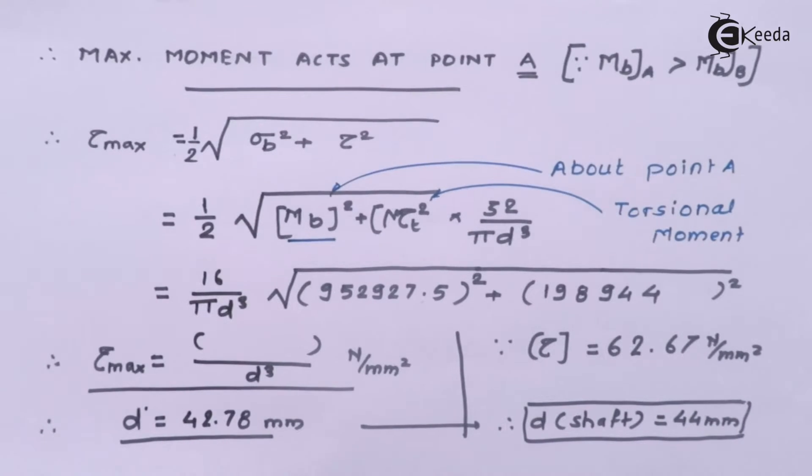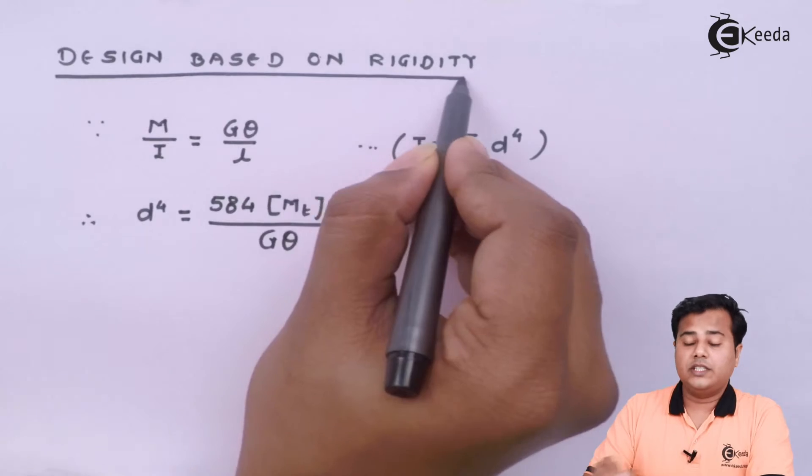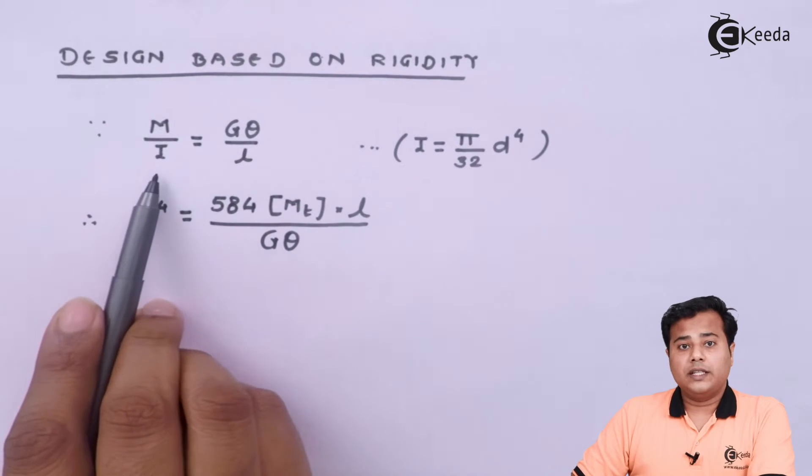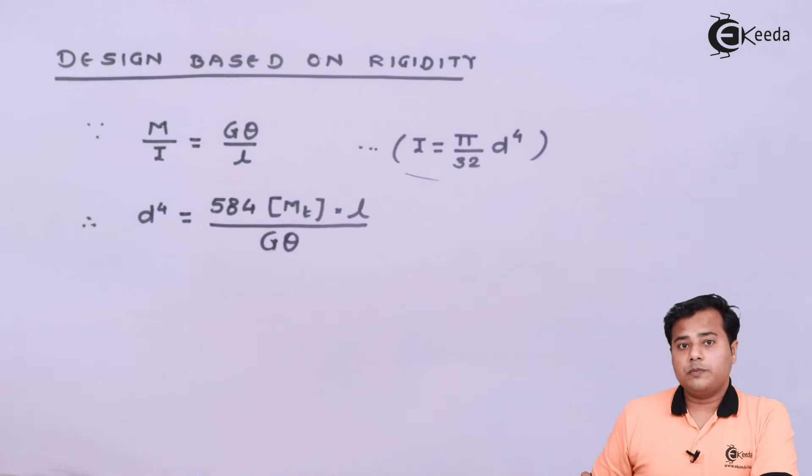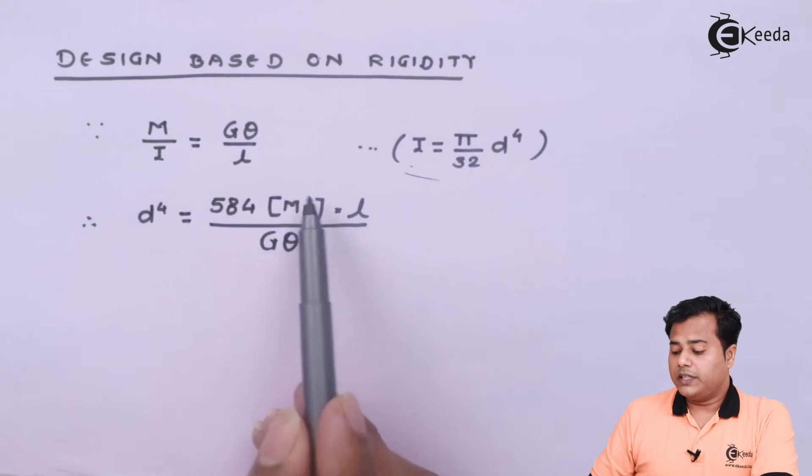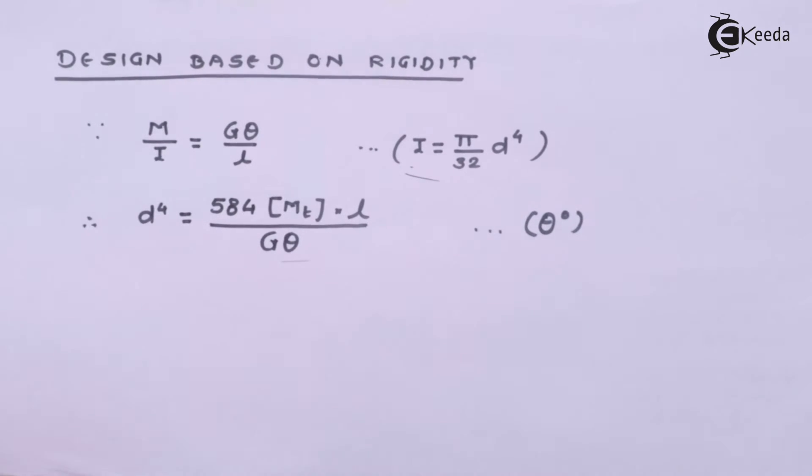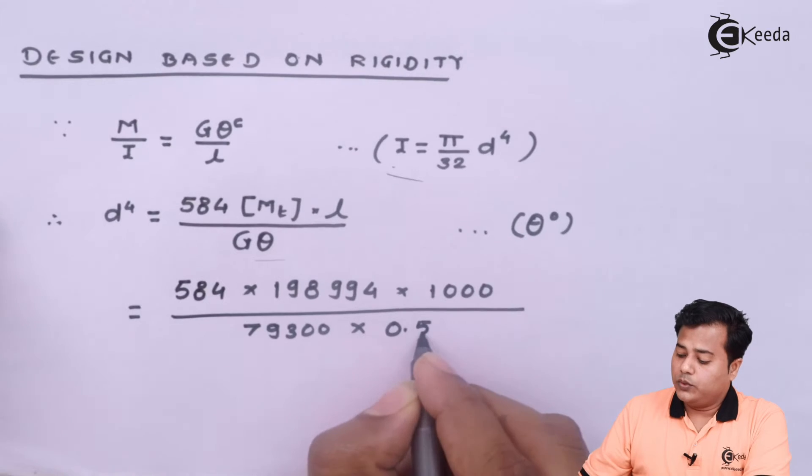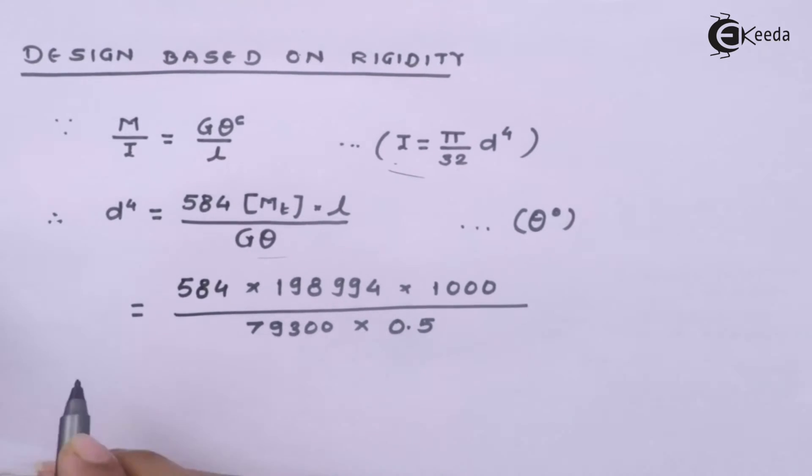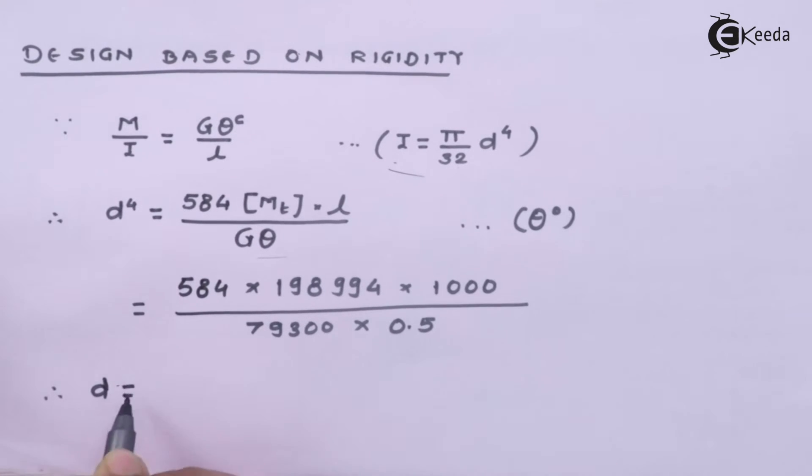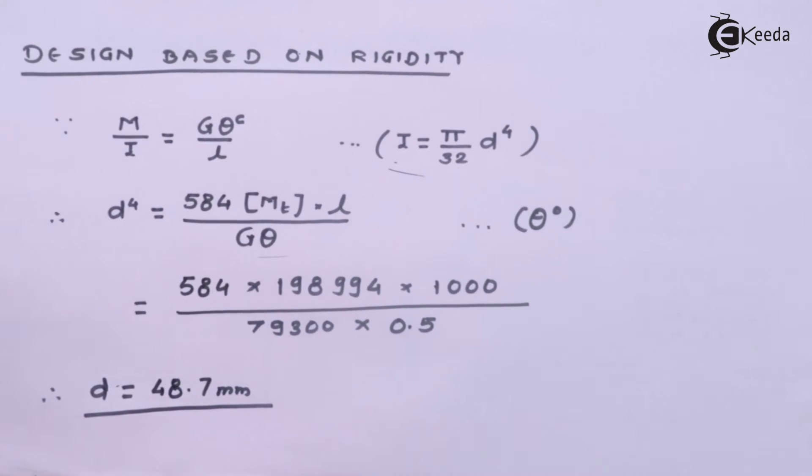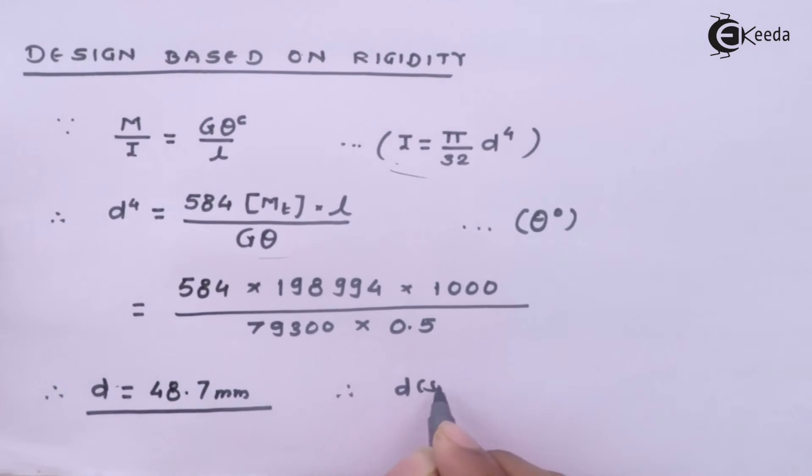But that is not the end of our problem, because we have been given the second condition: design based on rigidity. We know the bending moment equation M/I = Gθ/L. If we substitute the polar moment of inertia I = πd⁴/32, the formula gets converted where θ is expressed in degrees. Substituting the allowable value of twist, we get d⁴ = 584(Mt)×l/G0. Upon solving, we get approximately 48.7mm. The preferred value is 50 millimeters for d shaft.